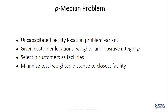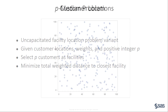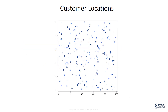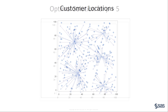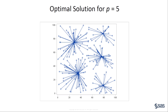The p-median problem is a variant of the uncapacitated facility location problem. The inputs are the customer locations, weights — which might represent importance or amount of demand — and a positive integer p. The problem is to select exactly p of the customer locations to build facilities, and the objective is to minimize the total weighted distance from each customer to that customer's closest facility. This plot shows the customer locations for 200 customers. If p equals 5 and all weights are 1, the resulting optimal solution looks like this, with 5 locations selected as facilities. Each edge joins a customer to the closest facility.